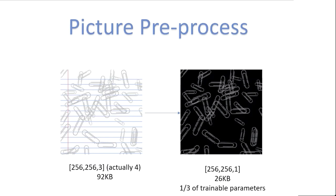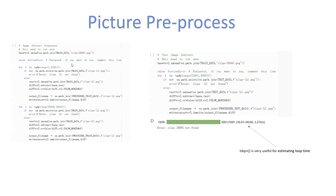To start, I'd like to talk about our picture pre-processing. On the left is the original picture, which actually has four channels — RGB and A, which is alpha, a special channel for PNG files. RGB is what's important here, and it takes around 92 kilobytes. We subtract this image with a base image, which leads to the second image shown here. As you can see, the lines are already gone, resulting in a grayscale image of 256×256×1 at only 26 kilobytes.